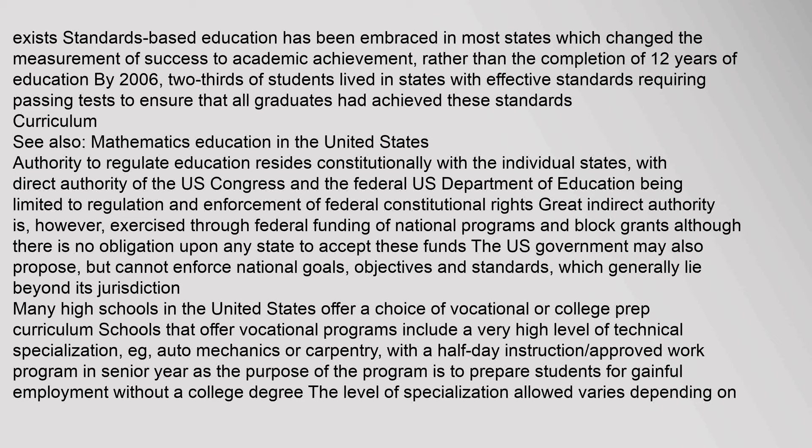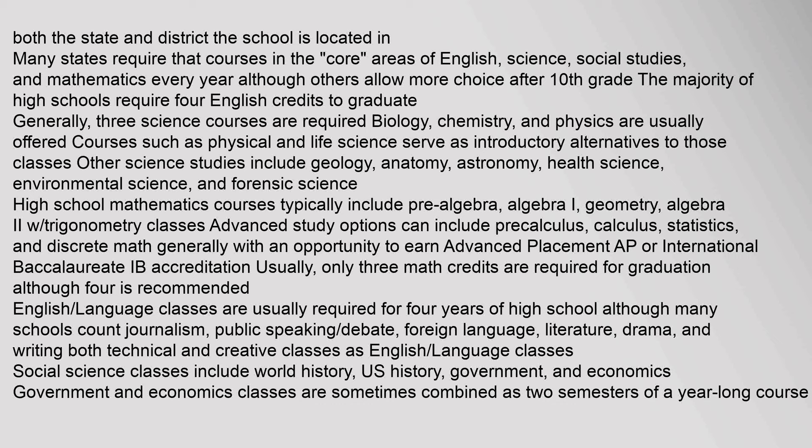Authority to regulate education resides constitutionally with the individual states. Both the state and district require that courses in the core areas of English, science, social studies, and mathematics be taken every year, although others allow more choice. After 10th grade, the majority of high schools require four English credits to graduate. Generally, three science courses are required. Biology, chemistry, and physics are usually offered; courses such as Physical and Life Science serve as introductory alternatives.